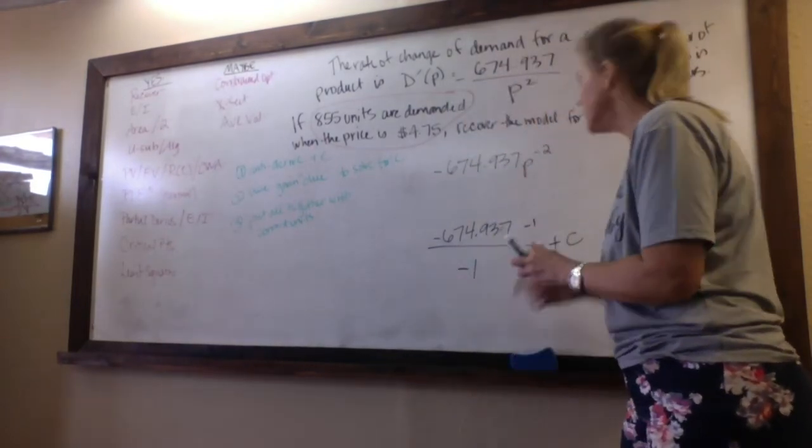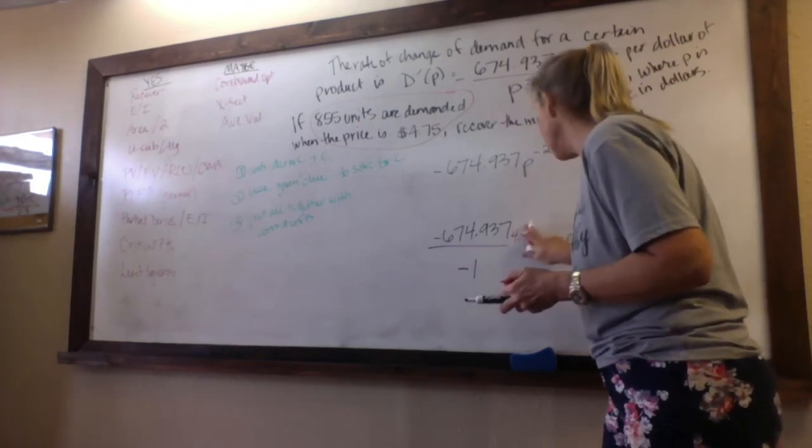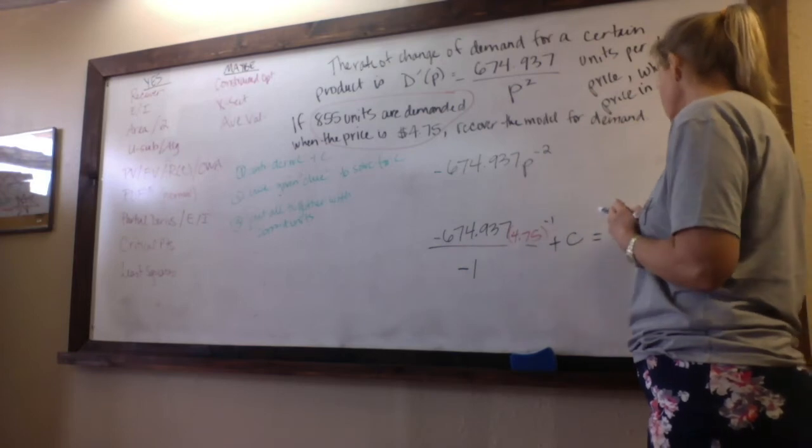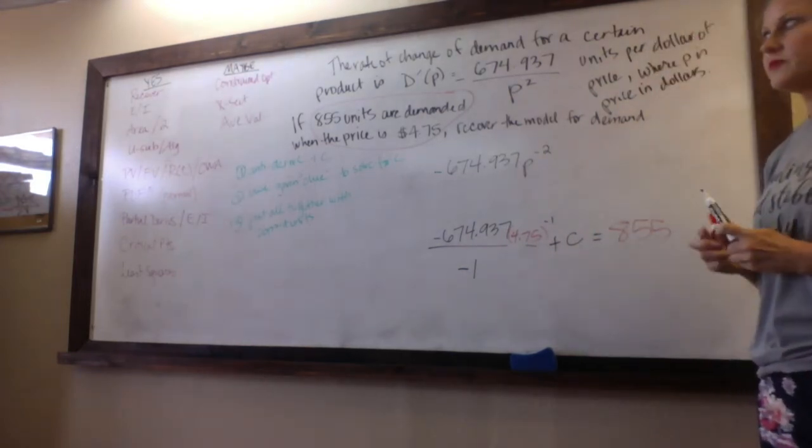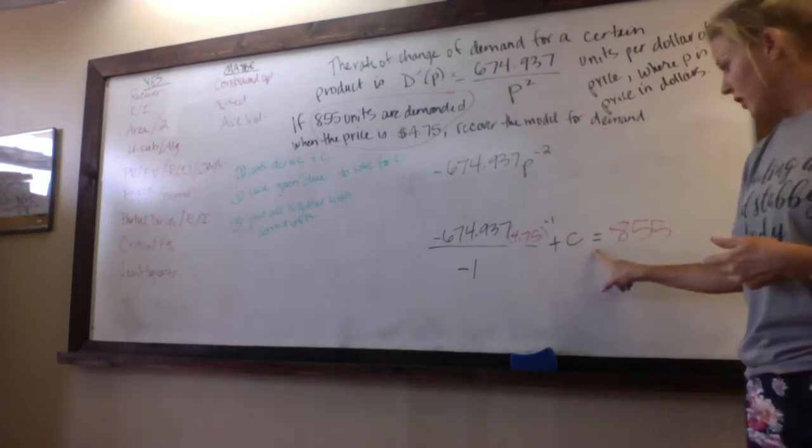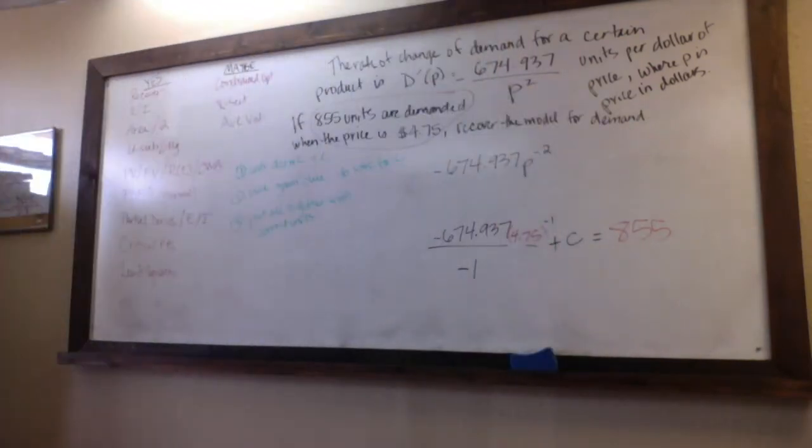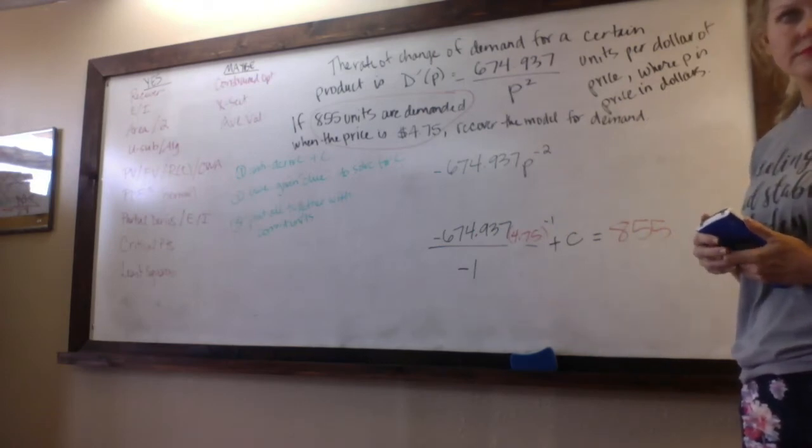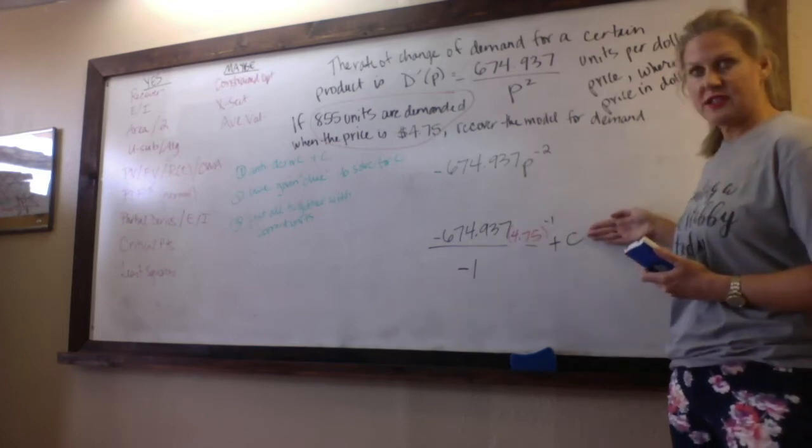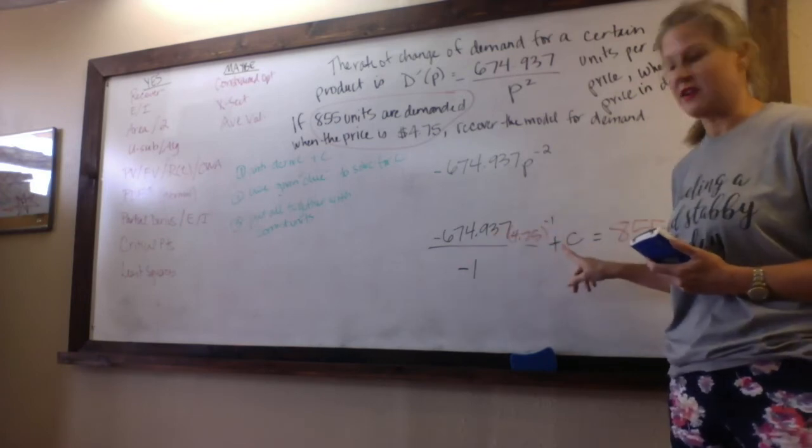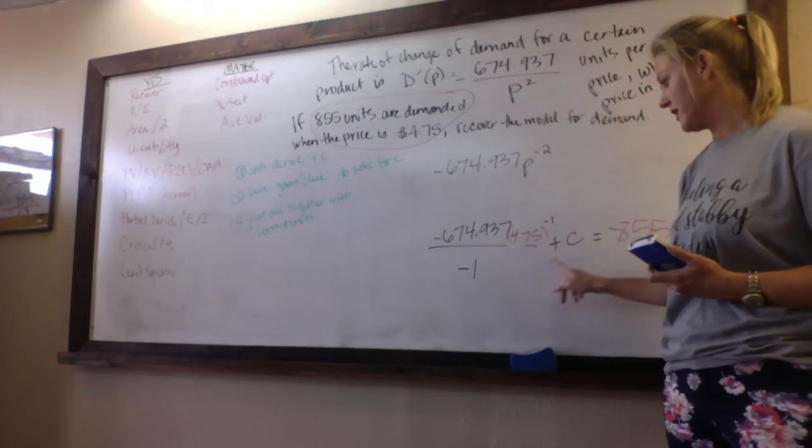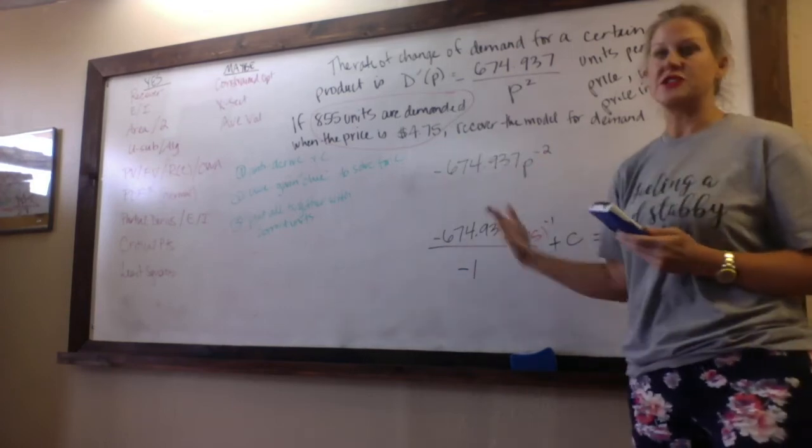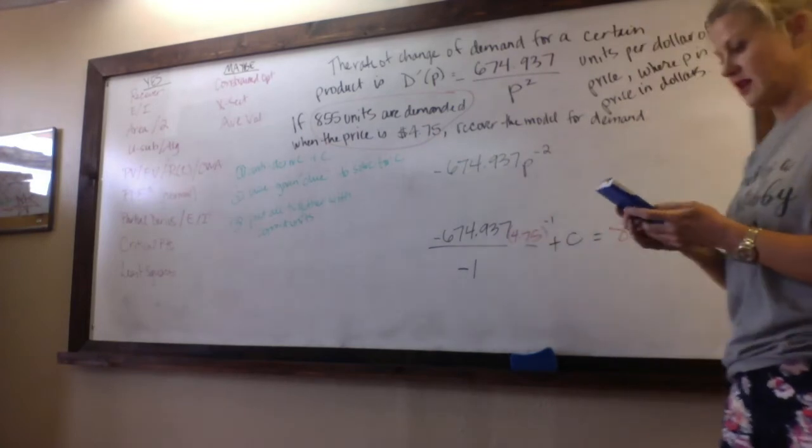So this clue means every single time, if you put 4.75 into the anti-derivative wherever you see the variable, the whole equation is equal to that number, and that's what lets me solve for C. So this guy says if you put 4.75 in for the variable, it's equal to 855. That gives you an equation with one variable and you can solve that. So when we first anti-derived it, that's just a new recovered model. This is where we actually are using it to help us.